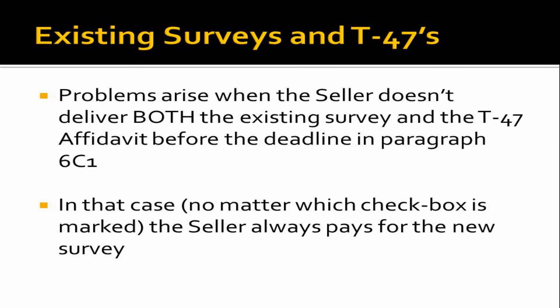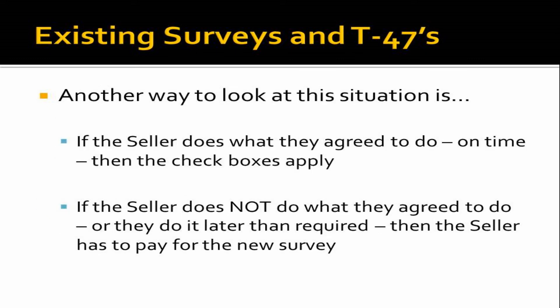Problems come up when a seller delivers one but not the other — the survey but not the T-47 affidavit — or delivers one or the other after the deadline. If the seller doesn't deliver both on time before the deadline, then no matter which box is checked in 6C1, the seller is always going to pay for a new survey. If the seller does what they agreed to and does it on time, then the checkboxes apply. But if they don't do what they agreed to or if they do it late, the seller has to pay for a new survey.